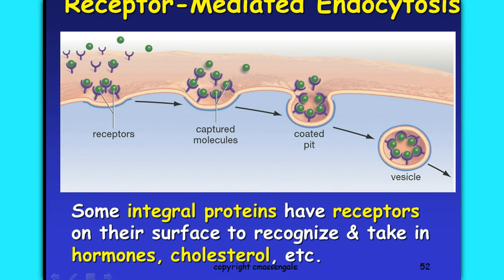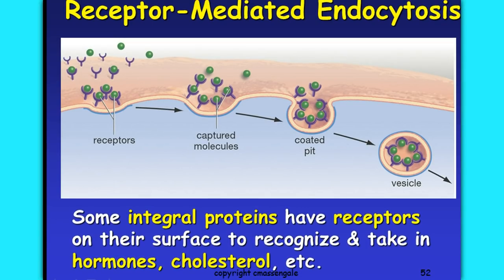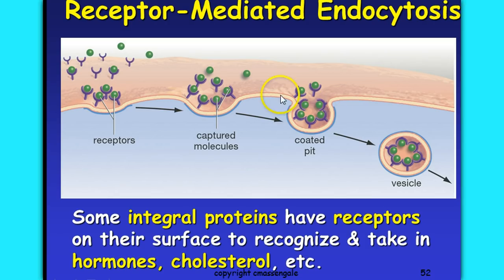There's also receptor-mediated endocytosis, which uses integral proteins built right into the surface of the cell membrane. These proteins have receptors that recognize and specifically take in a particular molecule. When something like a hormone binds to that surface protein, it signals the cell that it should be inside, causing the cell membrane to form a coated pit or invagination. All of those molecules are then taken inside a vesicle and transported into the cell.